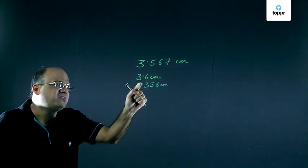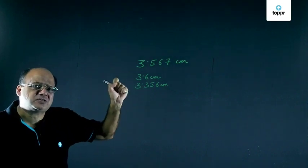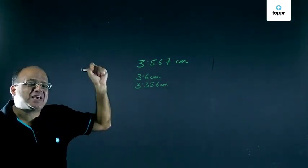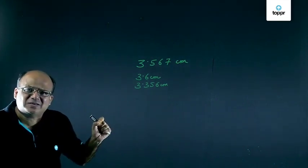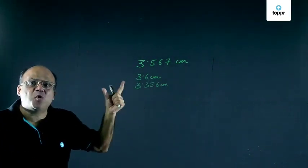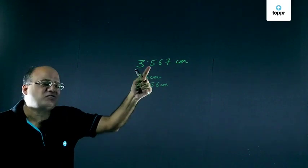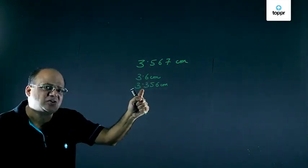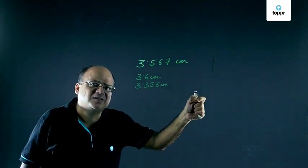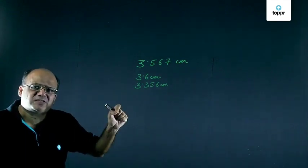Now this reading is more accurate. It is more closer to the exact value of that measurement. Therefore this 3.6 centimeter has got more accuracy. This reading is not so close, it is not very accurate, but it has got more number of decimal points. Therefore we say 3.356 has got more precision.